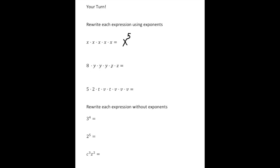Alright, welcome back — let's see how you did with the problems. Here we have X times X times X times X times X, so the base is X and the exponent is going to be to the fifth power, so X to the fifth. Here we have an 8, and that's the only number, so it's going to be 8, then Y to the third, and then Z squared. The next one: 5 times 2 is 10, and we have 2 T's, so it's going to be T squared, and then 4 V's, so it would be V to the fourth power.